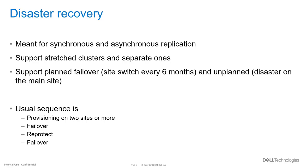In case we want to switch sites or an unplanned event occurs, we will failover — informing Kubernetes that it's time for the application to move from site A to site B. Once the application is ready and available on site B, we re-protect: we inform the backends that site B is now the source and that they need to re-sync data back to site A. Then we can failover again as needed.